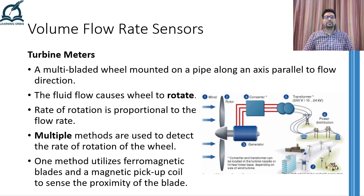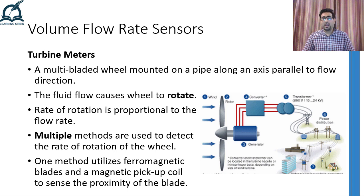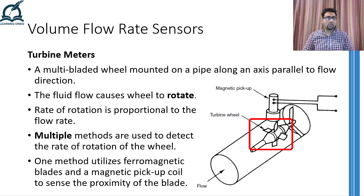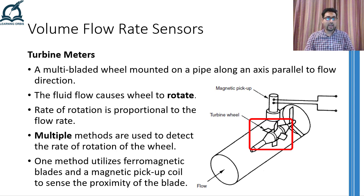The next volume flow rate sensor that I am going to discuss is called a turbine meter. It got its name from its similarity with how a turbine works. If you have any idea how electricity is generated in a turbine-based powerhouse, you can easily see what is going to happen here. A wheel having blades on it is mounted on a pipe placed inside the flowing channel, and the flow of the fluid will interact with the blades and cause it to rotate.